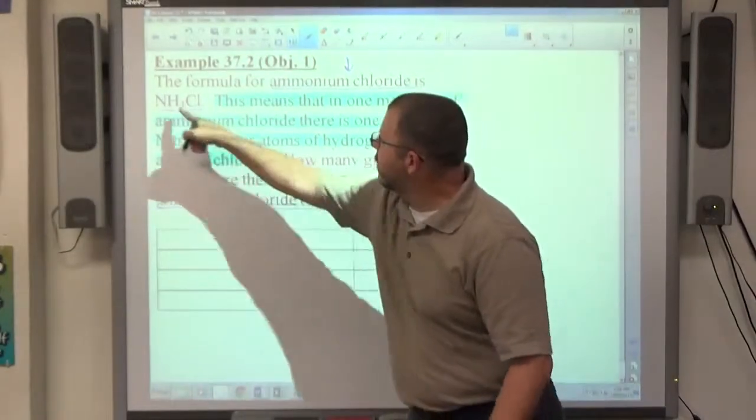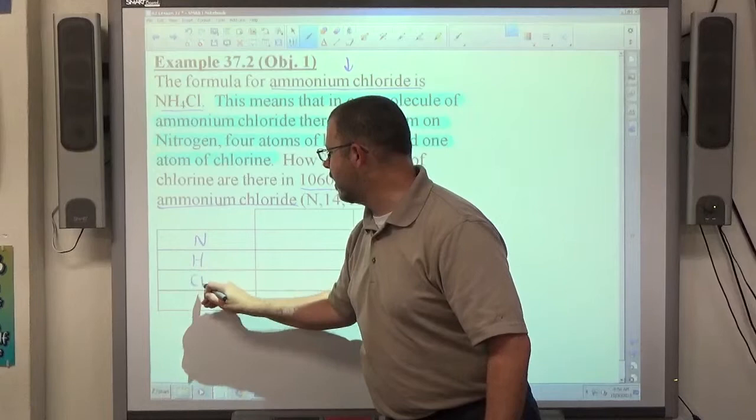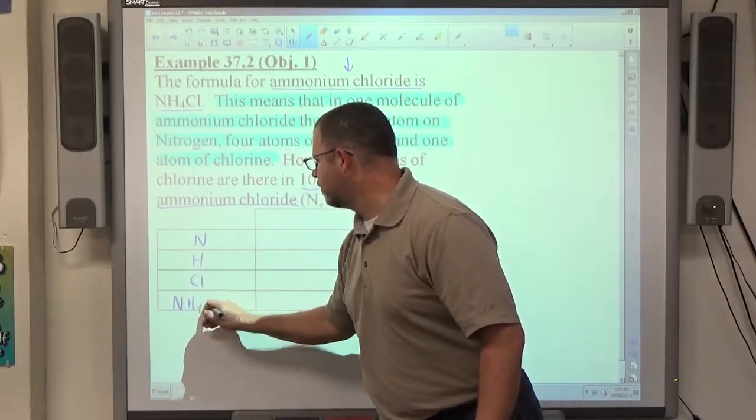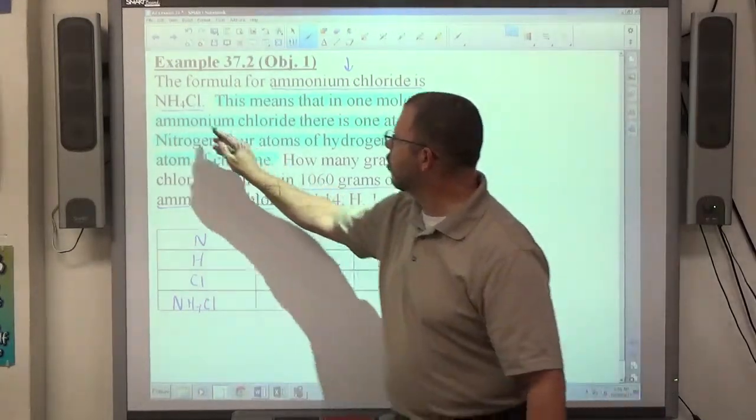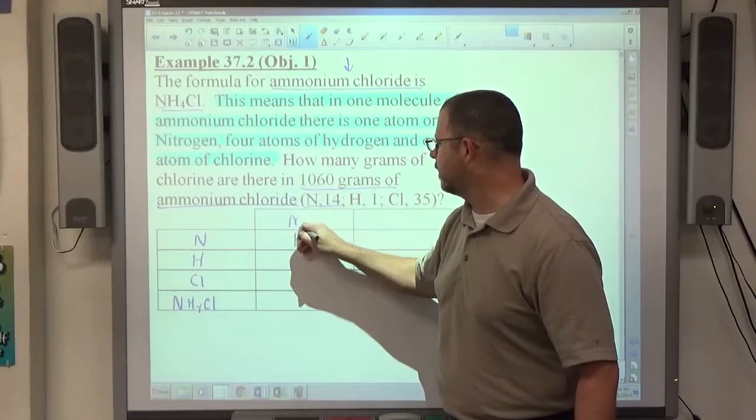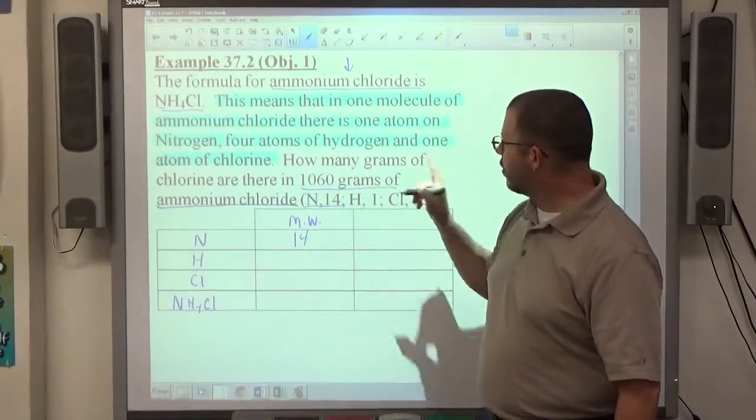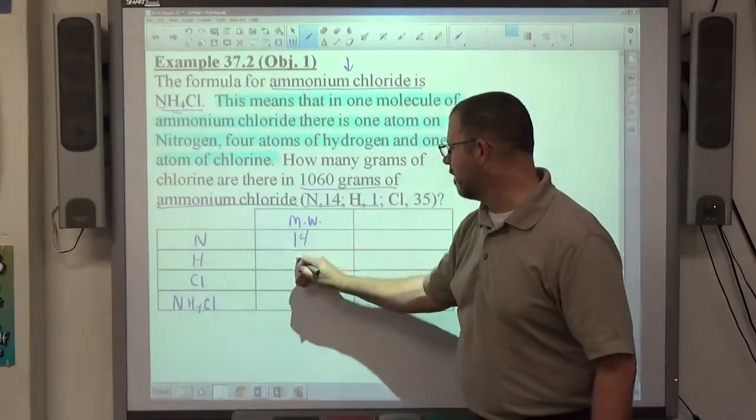So this time we have three atoms going into our molecule. So we have NH4, and our formula is NH4CL. Every nitrogen weighs 14. The formula tells me that I have 1, 1 times 14 is 14 for the molecular weight. There's four atoms of hydrogen. Each one weighs 1, so 4 times 1 is 4.